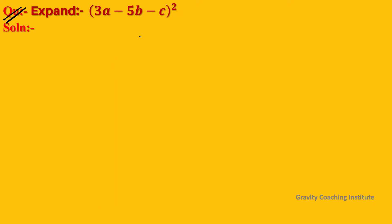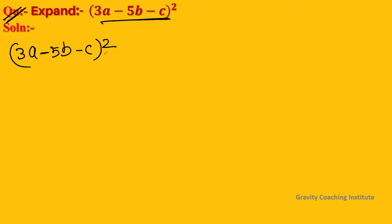Question: expand (3a - 5b - c) all square. We will expand (3a - 5b - c) all square and we will use an identity.